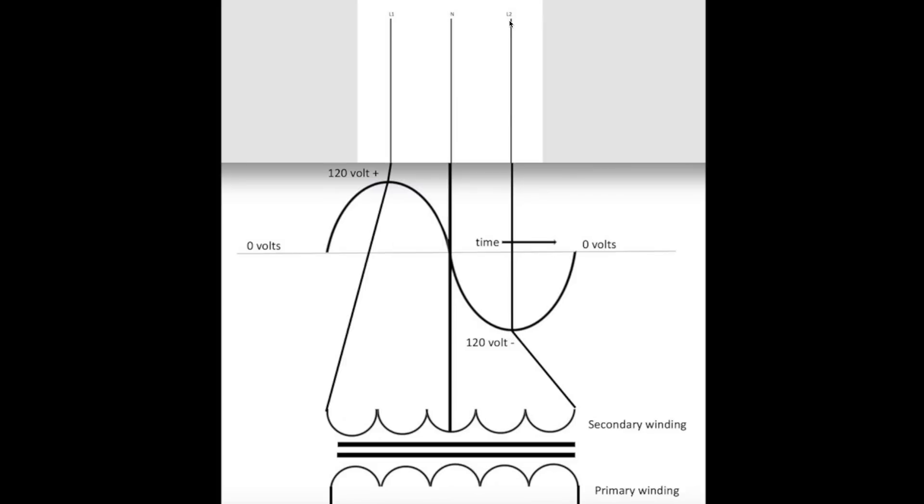So when we look at the voltage that comes out of this, we get that 240 across here from L1 to L2, and then the neutral will be 120 from L2 to neutral, and L1 to neutral will also be 120. And this is where, you know, I'm not sure I'm explaining this just right. This is my second attempt on this, of course.